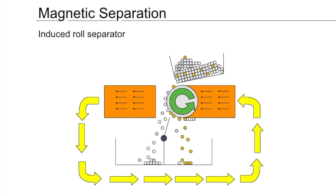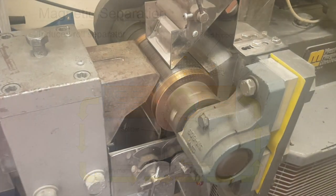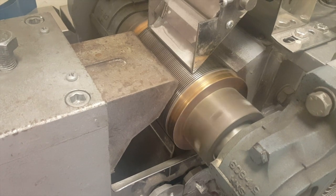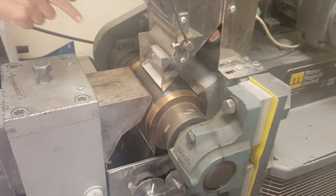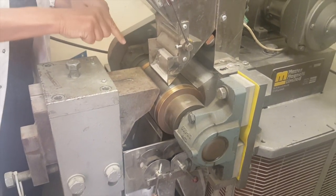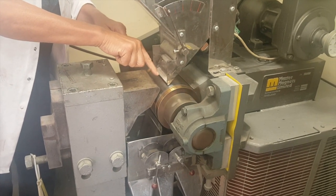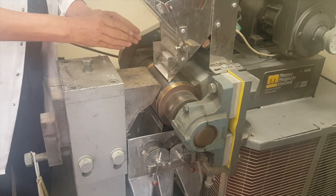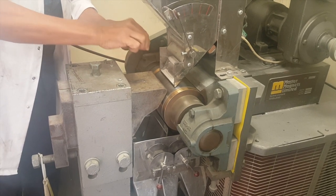It's important not to get obsessive about the magnetic field strength, because in mineral separation there are two important things: the magnetic field strength, but also the field gradient. It's a combination of those two that gives you separation performance. In the induced roll magnetic separator, the field gradient is generated by a series of laminations on the roll which are castellated up and down, giving a peak of magnetic field at the edges, which attracts paramagnetic particles to those edges.